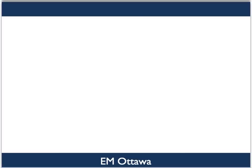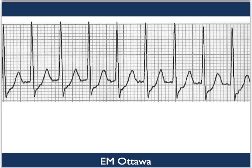Tachycardia is defined as a heart rate greater than 100 per minute. On a regular paced rhythm strip, it means that the QRS complexes would be closer together than three large squares.